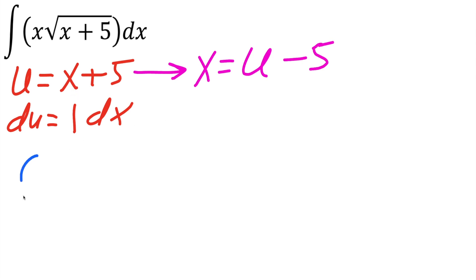At this point we can swap. So we have the integral, parentheses. Instead of x, we replace x with u minus 5, close parentheses, and we said that u is equal to x plus 5, so we'll have times the square root of u, close parentheses, du.